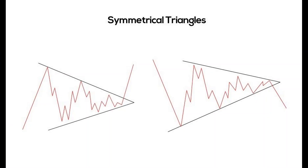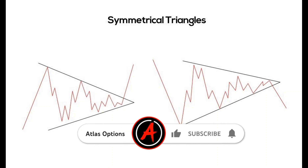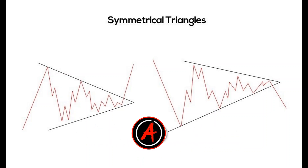Symmetrical triangles are chart patterns that can occur during uptrends and downtrends. These patterns are characterized by two trend lines that converge towards each other, forming a triangle-like shape.